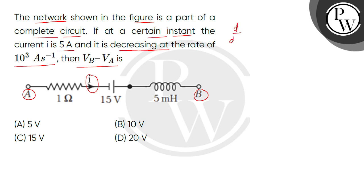It means di/dt is given as 10³ amperes per second, and the current i flowing in the circuit is given as 5 amperes. We have to find the potential difference Vb minus Va. So we apply the voltage law here.